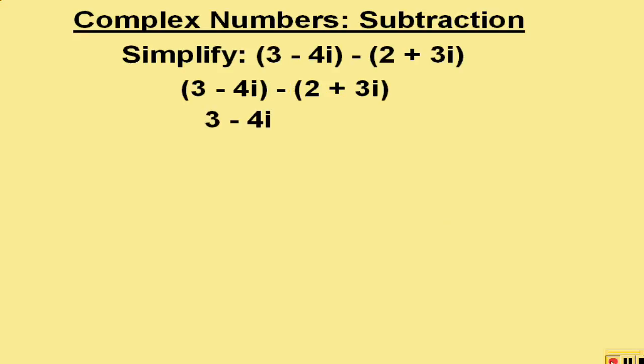The first complex number does not change because there is nothing in front of it affecting it. But the minus in front of the second one affects the 2 and changes it to a negative 2, and the 3i becomes a negative 3i.